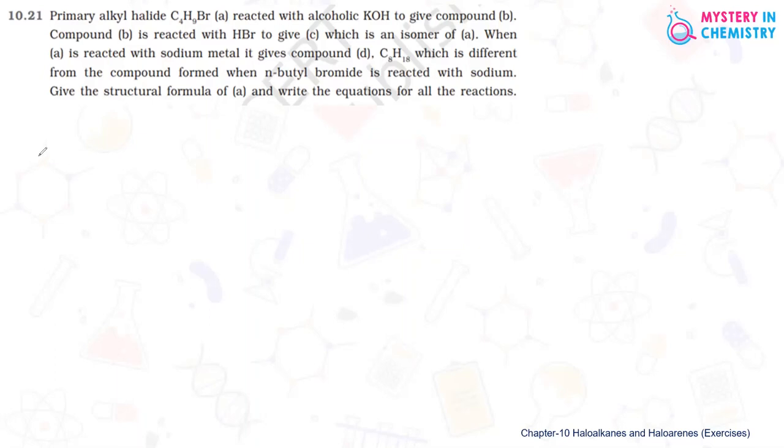First of all we are writing C4H9Br. C4H9Br is given and it is said that this compound is compound A. And one more information is given with this which is important, that is this compound is a primary alkyl halide.